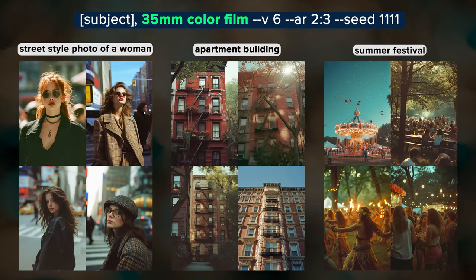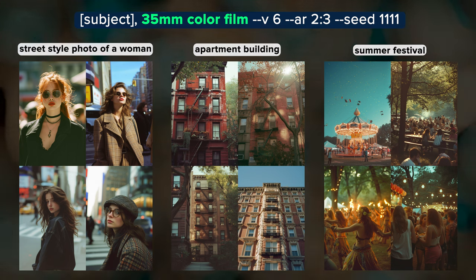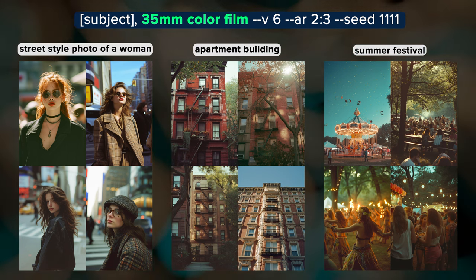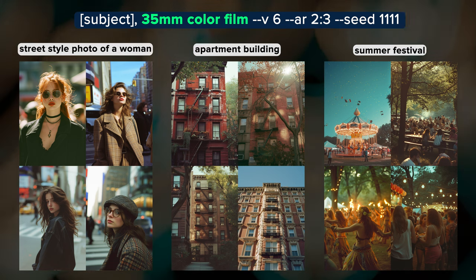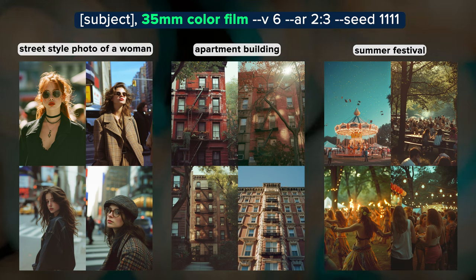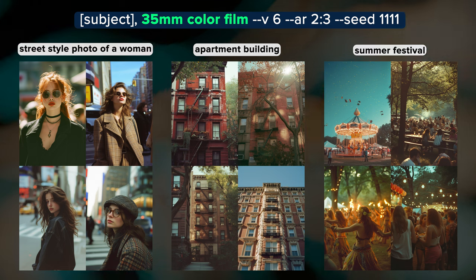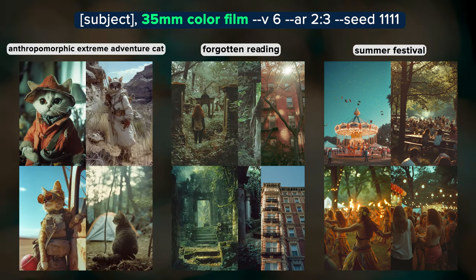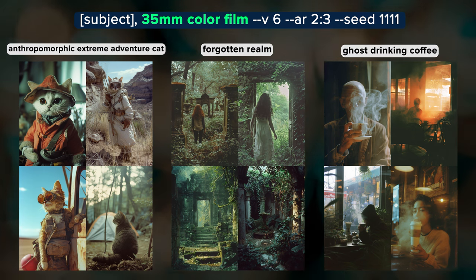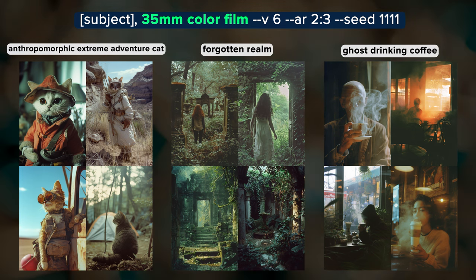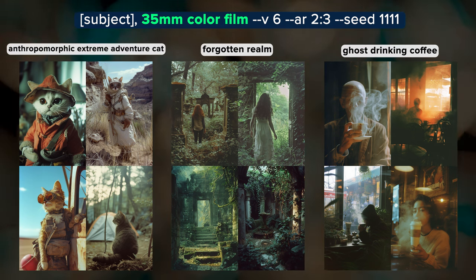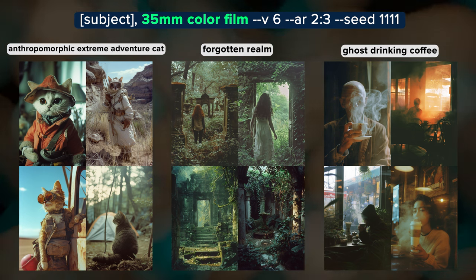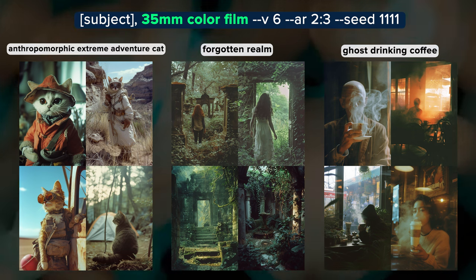35mm Color Film is a classic camera film that was widely used for photography and motion pictures. The color palette is visually appealing and works well for many genres of photography, including portraits and landscapes. These images have some really nice, rich warm tones and a nostalgic cinematic feel. Summer Festival looks like a summer festival now. We also got a few nice anthropomorphic cats out on an adventure. The Forgotten Realm images look like overgrown stone ruins, and it struggled with having a ghost drink coffee, opting for a person surrounded by steam and smoke.